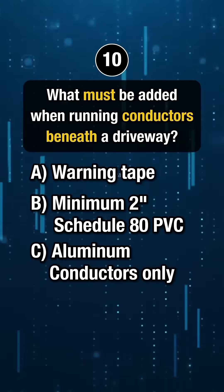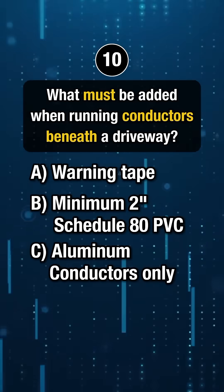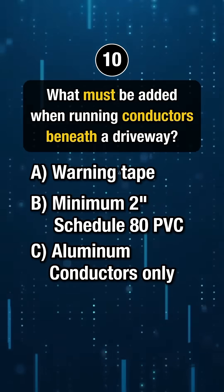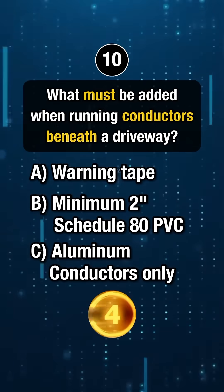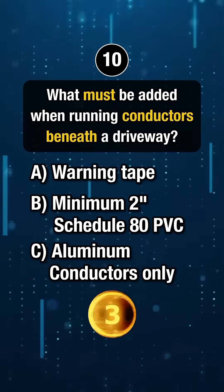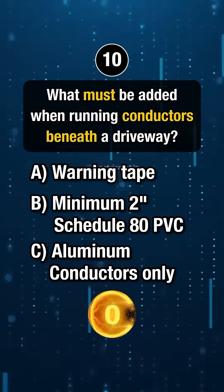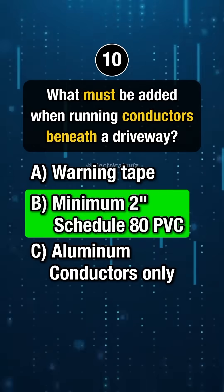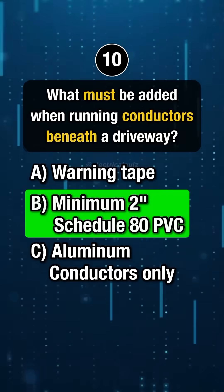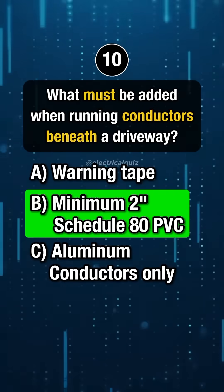Question 10. What must be added when running conductors beneath a driveway? Answer B: Minimum 2-inch Schedule 80 PVC.